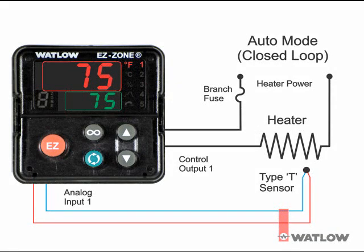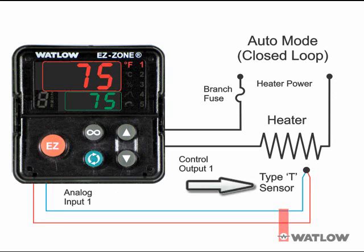In Auto mode, the controller monitors the sensor input to determine if closed loop control is possible. In this diagram, a type T thermocouple monitors the temperature of a heater. The controller checks to make certain a functioning sensor is providing a valid input signal. Assuming the user requested Auto mode and a valid analog input signal is present, the controller will perform closed loop control.